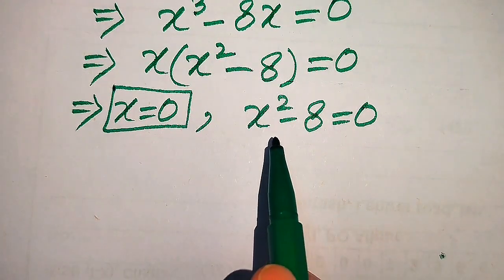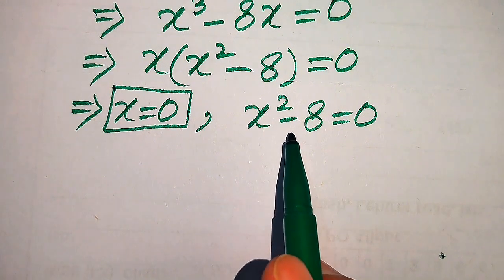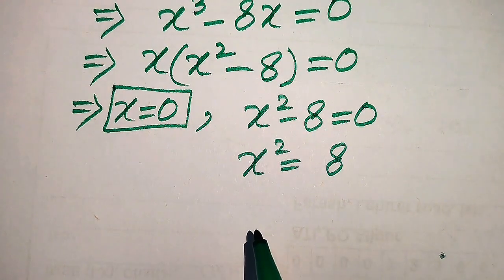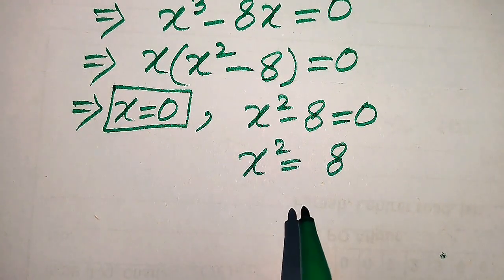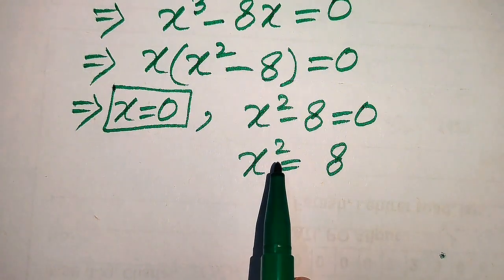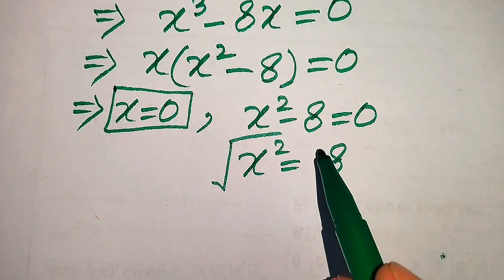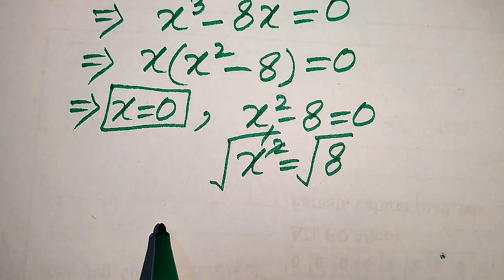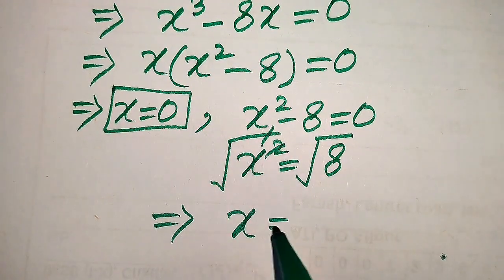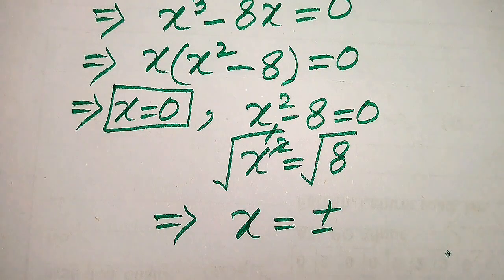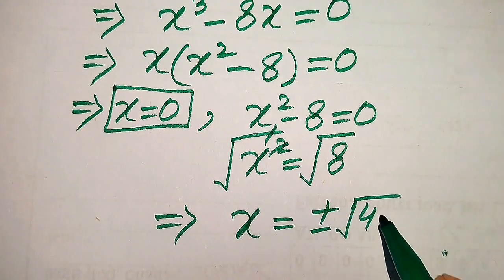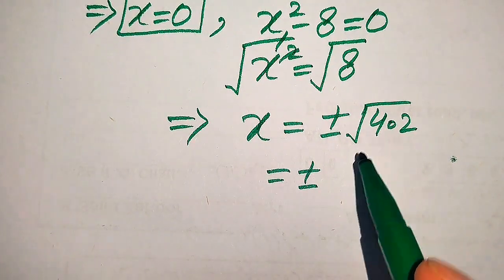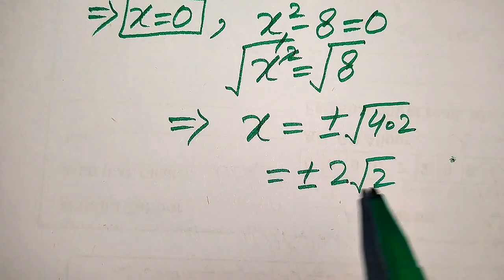To find the other roots we solve x squared minus 8 equals 0. We move minus 8 to the right hand side: x squared equals 8. We take square root on both sides to remove the square sign. In the next step the square and square root cancel and we get x equals plus or minus the square root of 8, which we write as square root of 4 times 2.